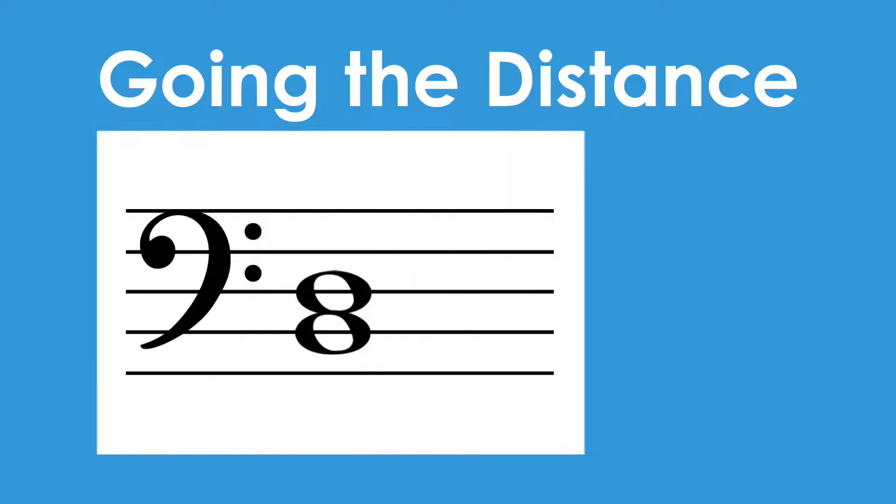Let's do another example in bass clef this time. If we have this B and D, we will count the B line as 1, the C space is 2, and the D line is 3. So the distance these two notes are from each other is a third.